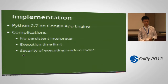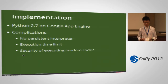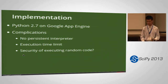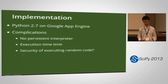So how do we implement this? It runs on Google App Engine, which has Python 2.7, but this presents some complications. The biggest one is no persistent interpreter — we have to find some way to save the user state between every statement. There's also an execution time limit on Google App Engine, and we have to deal with the fact that we're allowing users to execute arbitrary Python code on our server.